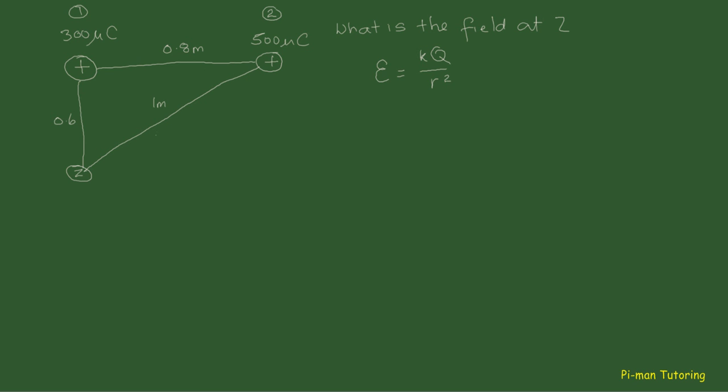Now people start thinking about this second charge sitting over here, charge 2, which is acting at an angle on position z. So they think they have to deal with some kind of components in the x and y direction. Let's just put some axes on here — we'll call the horizontal distance x and the vertical axis y. At location z we're going to have some x and y components of the field coming from charge number one, and we'll need to combine those with the x and y components of the field coming from charge number two. And here's where people get confused — they start doing components of distance instead of components of field.